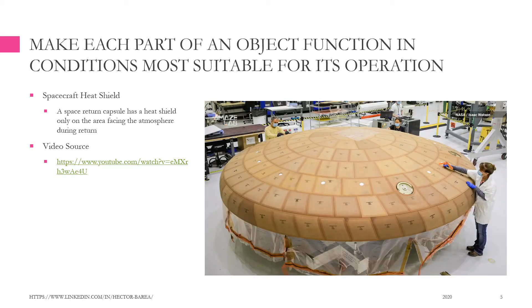Make each part of an object function in conditions most suitable for its operation. For example, Spacecraft Heat Shield: a space return capsule has a heat shield only on the area facing the atmosphere during return.